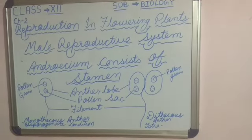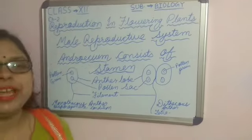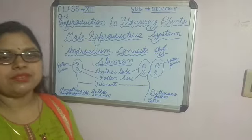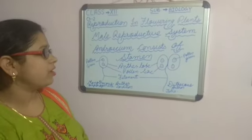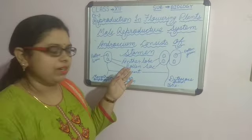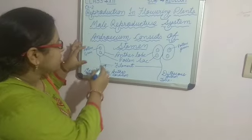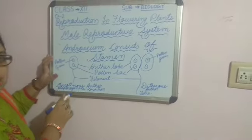Hello everyone, today we will discuss the male reproductive system in plants. The male reproductive system in plants consists of the androecium and stamen. We have to see the structure of this androecium, which mainly consists of a lobe structure known as the anther and a filamentous structure.